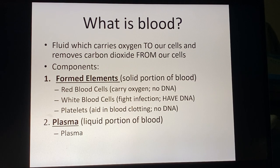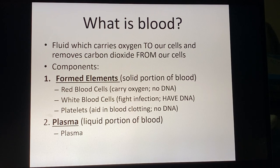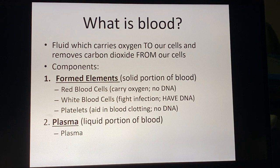In forensic science, when a suspect leaves blood at a scene, we want to get a DNA profile from that blood. The DNA profile comes from white blood cells. Red blood cells carry oxygen and have to be a particular shape to do that — they don't have room for DNA, and they don't have time for it either. All cells that have DNA must replicate that DNA when they divide, which takes about 24 hours. Red blood cells need to be produced rapidly, so they don't carry DNA. When you hear on a crime show that a DNA profile was obtained from blood, that profile is coming from the white blood cells.